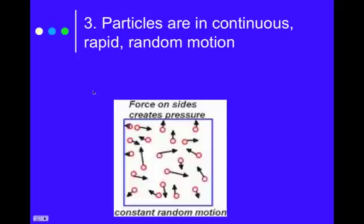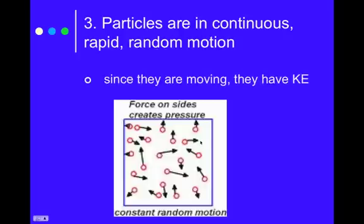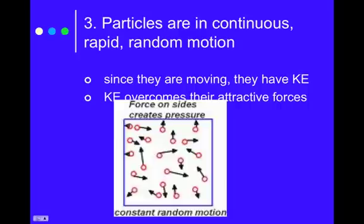The third assumption is that particles are in continuous, rapid, random motion. They are just literally bouncing all over the place. So they're moving, they have kinetic energy, and it's the kinetic energy that causes them to overcome their attractive forces, which will actually lead us into the fourth assumption. But all these little gas particles, they're just going. They do always travel in straight lines. You're not going to have a gas particle just randomly curve. Now again, this is in an ideal gas.